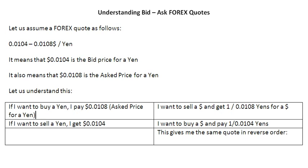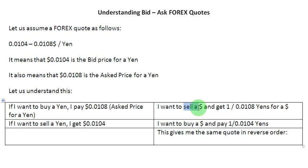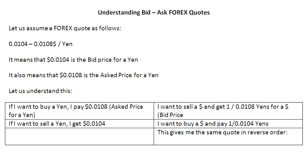Now, buying a yen also means the same thing as selling a dollar. So in this section of the table, I am rewriting this sentence in the reverse order — rather than saying I am buying a yen, I am saying I am selling a dollar. And if I do that, I am going to get the reciprocal of this number in return: 1 over 0.0108 yens. So in this format, 1 over 0.0108 becomes the bid price for a dollar.